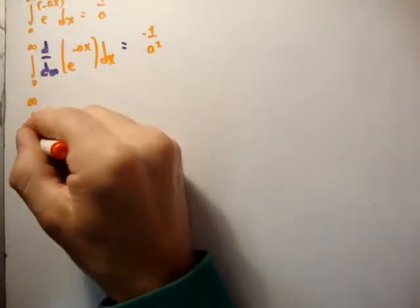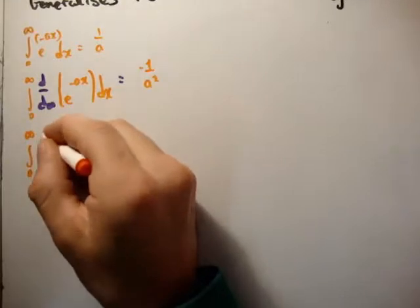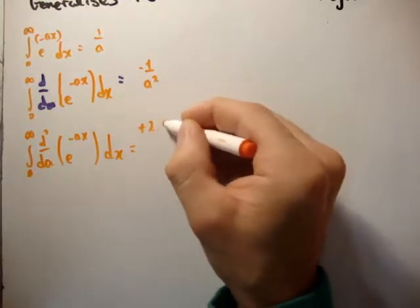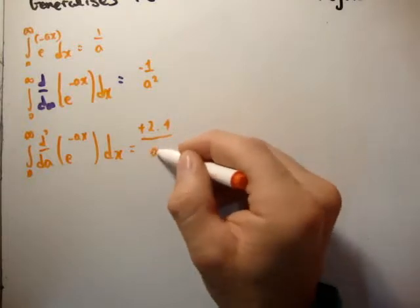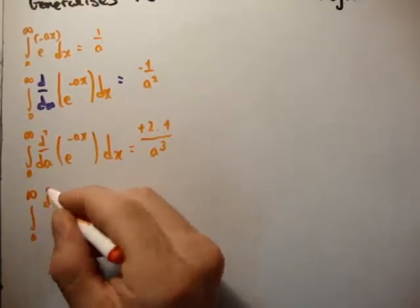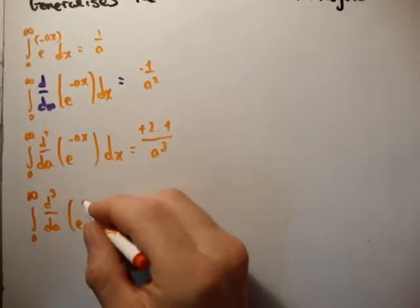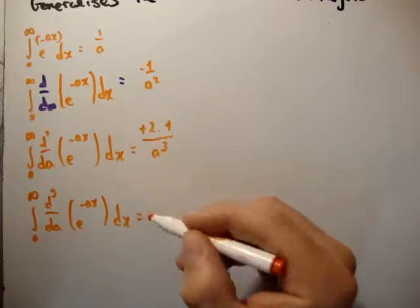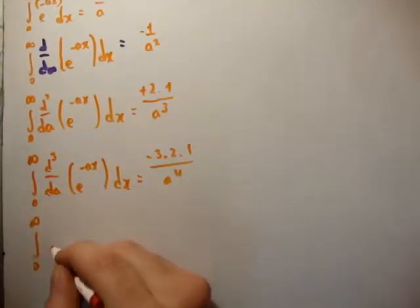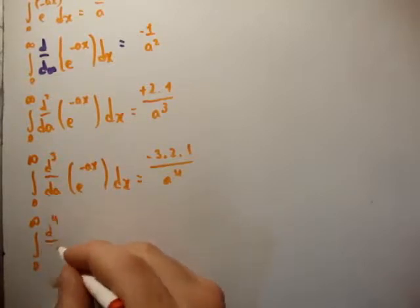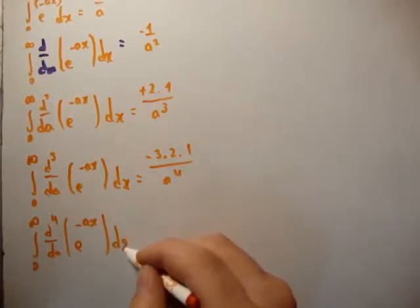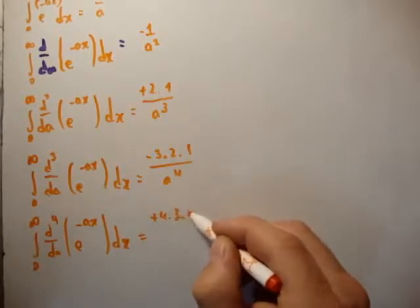If we take the next derivative, d²/da² of the integral of e to the minus ax dx, you're going to get plus 2 times 1 over a cubed. You'll see that I'm writing the 1 even though it's not necessary, but we'll see why in a moment. If we take the next derivative, we're going to get minus 3 times 2 times 1 over a to the 4. And then taking the fourth derivative with respect to a — and the fact that I'm taking it with respect to a is important. You might make a mistake where you try to take it with respect to x, and that of course doesn't work.